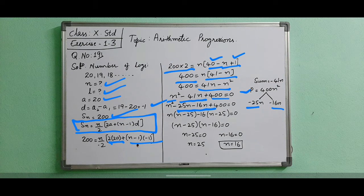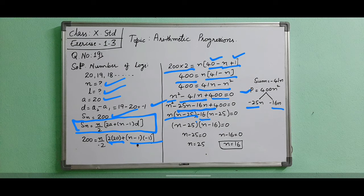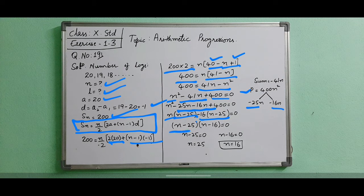Starting 2 terms have n as common, so it is remaining n minus 25. Next 2 have 16 as common because 400 can be written as 16 into 25. So n is common minus 25. So 2 roots we are getting: n minus 25 and n minus 16.